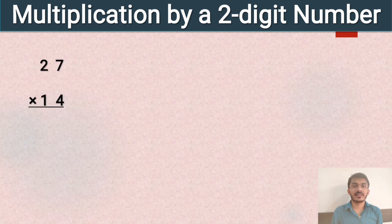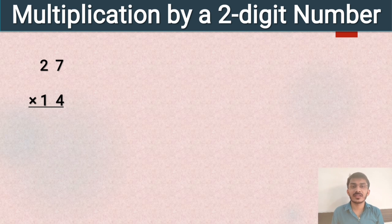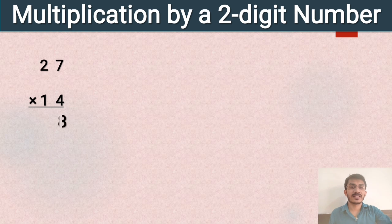First example is 27 multiplied by 14. 27 is the multiplicand and 14 is the multiplier. Remember, when you multiply any number with a two digit number, first you have to multiply the multiplicand with the ones digit of the multiplier. So first we multiply 27 by 4, because 4 is at the ones place. 4 sevens are 28.